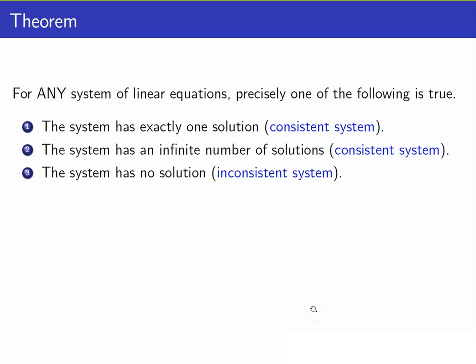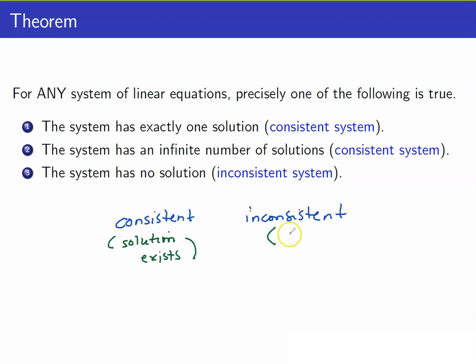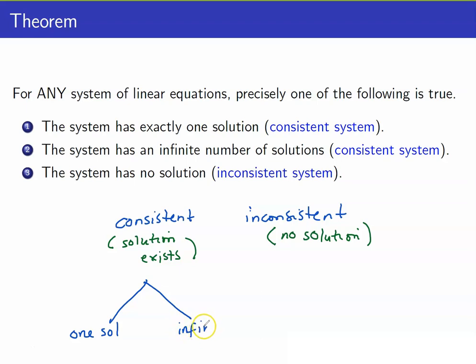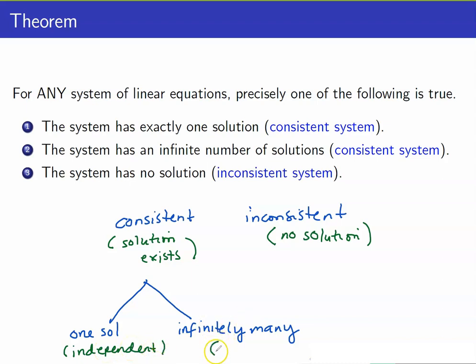In general, this is true for any system of linear equations, not just systems of two linear equations in two variables. The system is either consistent or inconsistent. Consistent means you have a solution; inconsistent means you have no solution. For consistent systems, you can either have exactly one solution — in which case the system is independent — or infinitely many solutions, in which case it is dependent.